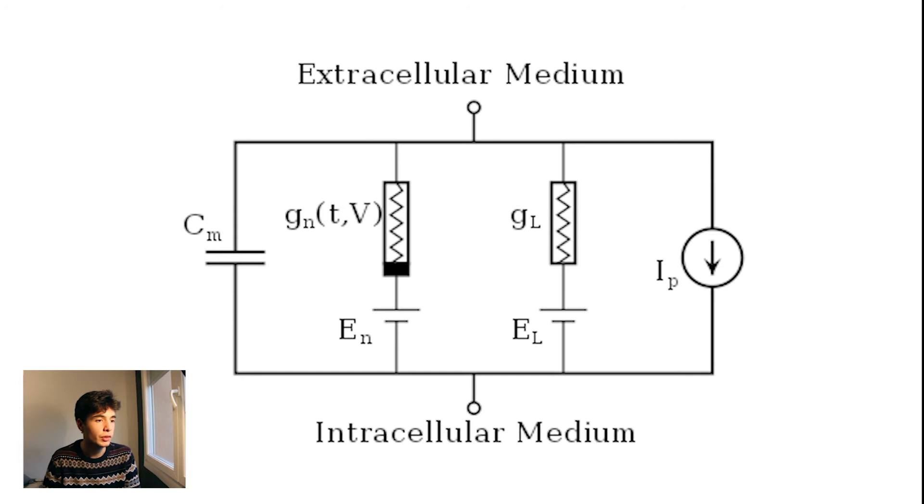The components of this circuit are the capacitor CM, which represents the membrane of the neuron, the two electrical conductances, which represent the voltage-gated channels, the voltage sources En and El represent the flow of ions, and the current source Ip injects current into the system.